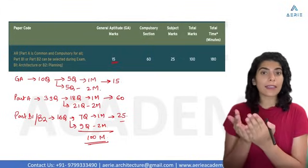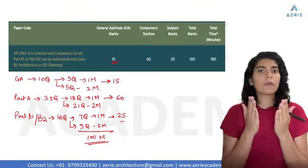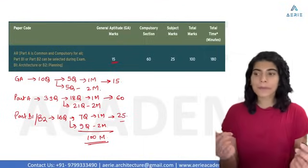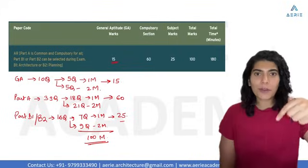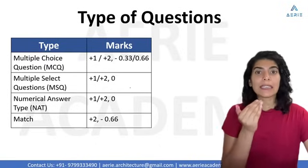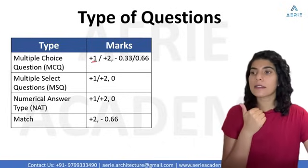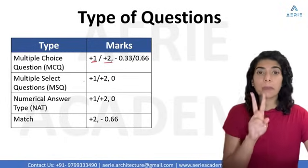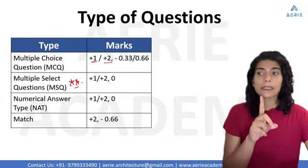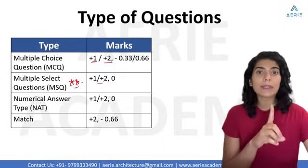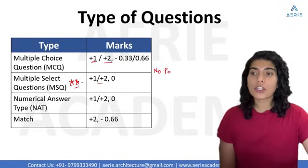Part A has the highest weightage, so if you are watching in April, May, or June, I suggest starting your preparation with Part A. If you are starting after July, drop a comment below and I can guide you on where to start. Moving on to the types of questions: we have multiple choice questions (MCQ) of 1 or 2 marks with negative marking. Then multiple select questions (MSQ) — very important to tackle — of 1 or 2 marks with no negative marking. For MSQ there is no partial marking either.